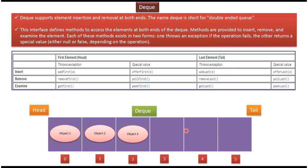To remove an element from the tail side, we have two methods: RemoveLast and PollLast. In case of operation failure, the RemoveLast method throws an exception. In case of operation failure, the PollLast method will return NULL. To examine whether an element is present at the tail side, we have two methods: GetLast and PeekLast. If the operation fails, getLast will throw an exception; PeakLast will return NULL.